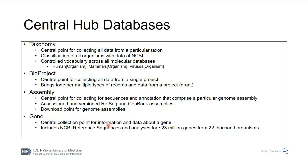BioProject is a central point for collecting data from a single project. Many projects generate multiple types of data — next-gen sequencing, protein data, nucleotide sequence data — and you can find all of it at the BioProject level. Assembly is another central database where you can find all the sequences corresponding to a particular genome, like the human genome, with all chromosomes, annotation, and partial sequences collected in one place.